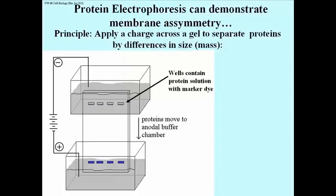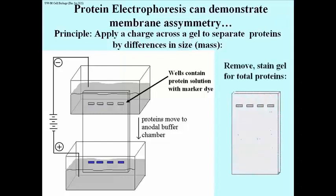The blue dye has been chosen so that it moves faster than any proteins that we might have in the solution. We take the gel out of this apparatus. We stain the gel with a colorimetric dye that recognizes proteins generally, and turns them colored. In this case a kind of a light blue.